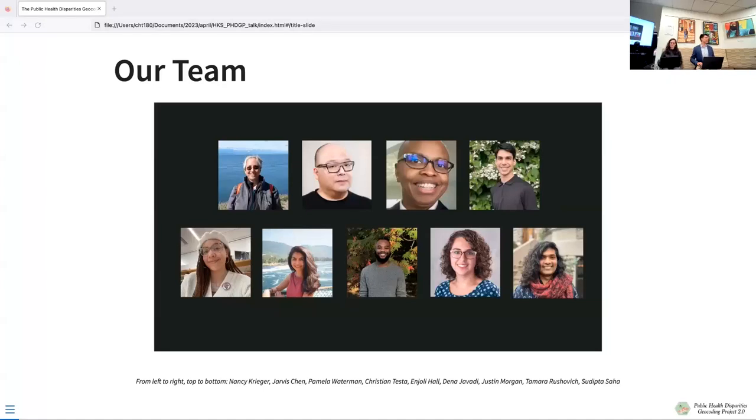Before I get into the nitty-gritty of what we did, I want to acknowledge our team. Our team was really miraculous and wonderful in putting all of this together. Nancy Krieger at the Harvard T.H. Chan School of Public Health was the PI for the Public Health Disparities Geocoding Project 1.0, which Alessandra mentioned was done back around 2004. We also have Professor Jarvis Chen, Pamela Waterman, myself, Anjali Hall, Dana Javadi, Justin Morgan, Tamara Rushevich, and Shu Saha, who all contributed their wonderful expertise across a range of focus areas, including urban planning, political and economic determinants of health, community-engaged research, social epidemiology, and statistical modeling expertise.